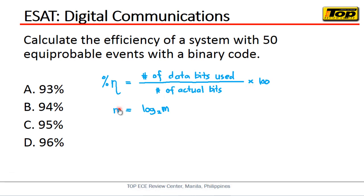But how do we find the data bits used and the actual number of bits? We have 50 equiprobable events, meaning this is the number of possible combinations of a character. So 50 is the number of combinations that can be formed with a certain number of bits. For example, if you have 3 bits, the number of possible combinations is 2 raised to 3, which equals 8.